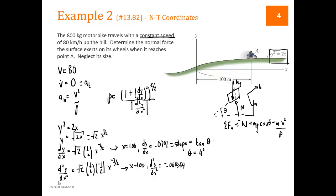So we found all the parts to rho. We can plug them all in. Rho is equal to 1 plus 0.0707 squared to the 3 halves divided by 0.000354 squared is equal to 2,849 meters.